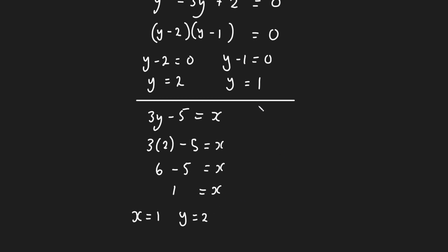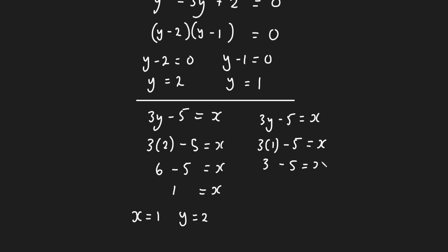Now to find our second set of solutions, I'll take the rearranged linear equation again — 3y − 5 = x — and substitute y = 1: x = 3(1) − 5 = 3 − 5 = −2. So our second set of solutions is x = −2, y = 1.